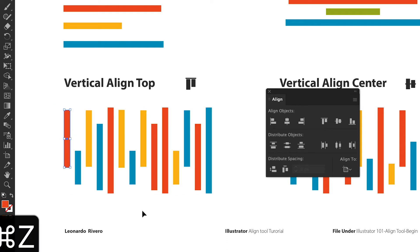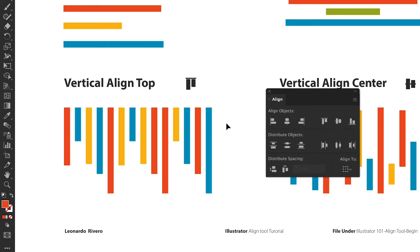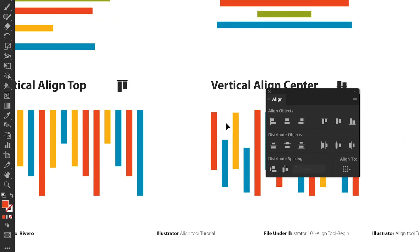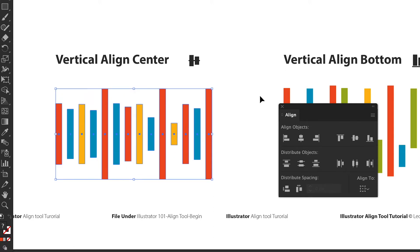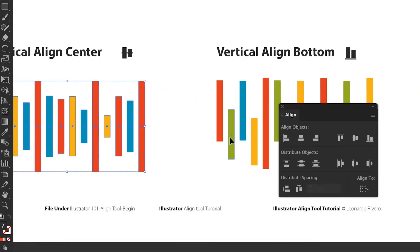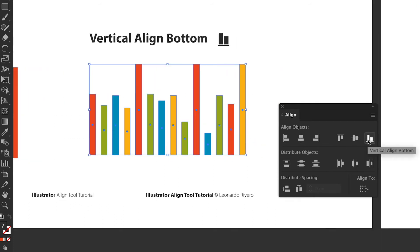Let me undo that so we can do it better. We take these elements and align them to the top — that's better, more organized. Let's do the vertical align to the center: we take the elements and click vertical align center. That's perfect, really simple. Let's try the vertical align to the bottom: we take the elements and align them to the bottom. Really simple, really easy to do.